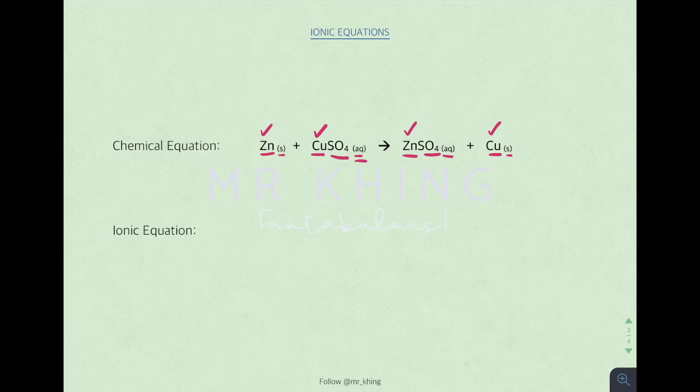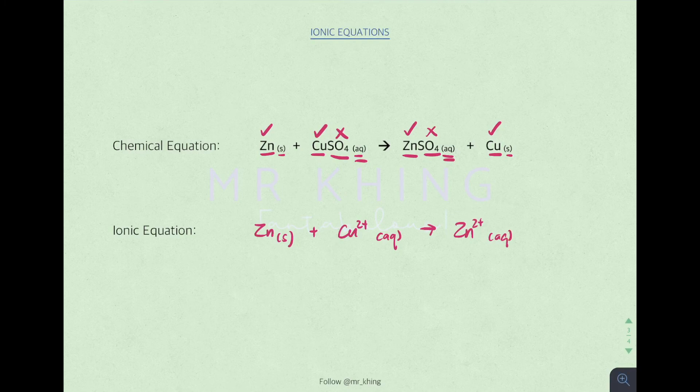Sulfate aqueous, sulfate aqueous. Sulfate ions remain the same before and after in terms of the state symbol. Therefore, this is what we call as spectator ion. Eventually, you will have zinc solid with Cu2+ aqueous to form zinc 2+ aqueous and Cu solid. This is how the ionic equation looks like.